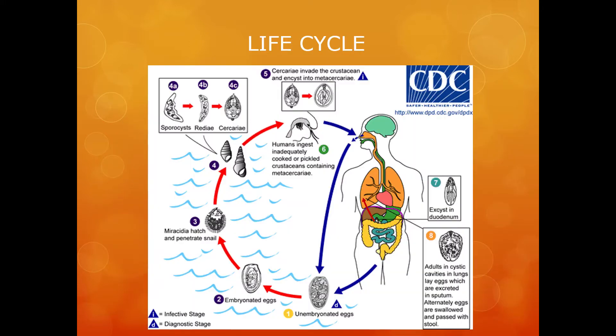Their life cycle is as such. The unembryonated eggs are secreted in the sputum, or if they are swallowed they are then passed with stools. In the environment, the eggs then become embryonated and miracidia hatch and seek the first intermediate host, which is the snail, and penetrate the snail's soft tissue.